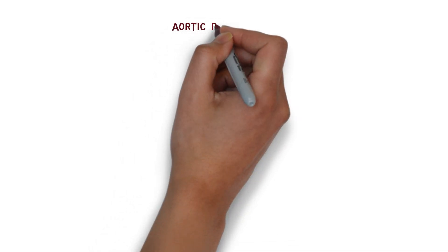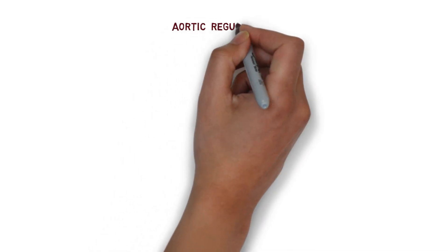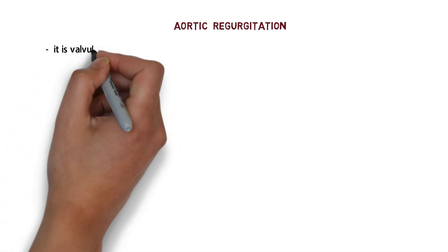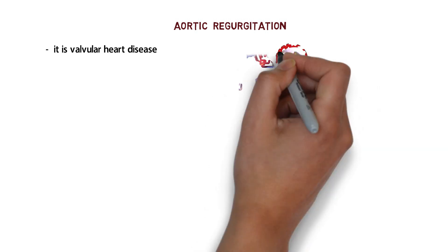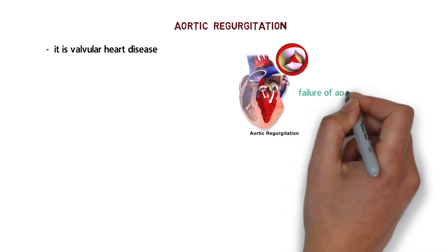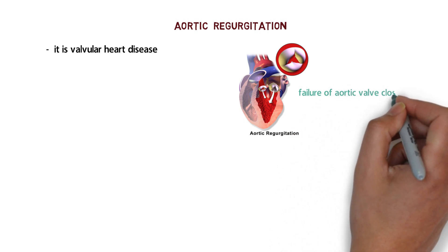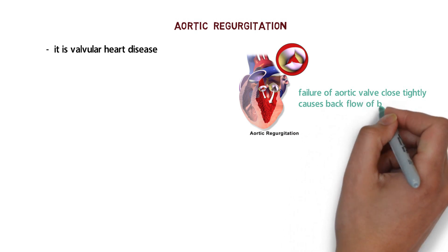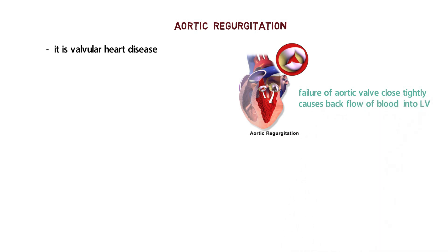Today we are going to start with the examination findings of aortic regurgitation. Aortic regurgitation is a valvular heart disease in which there is a failure of the aortic valve to close tightly, causing backflow of blood into the left ventricle. This condition is called aortic regurgitation.